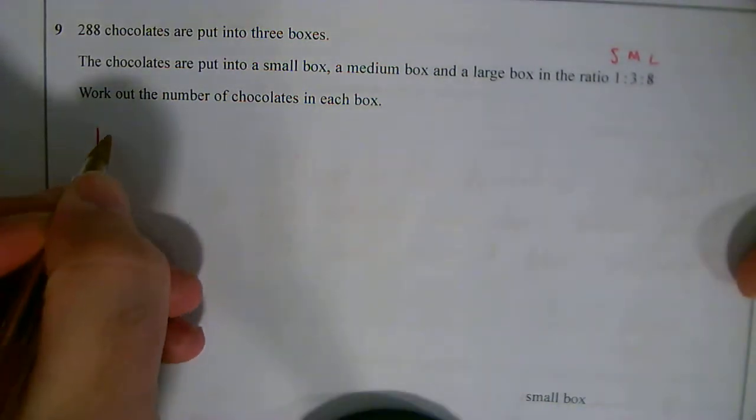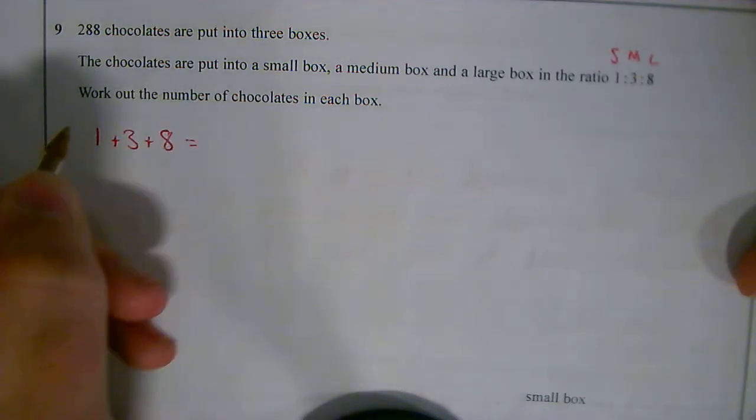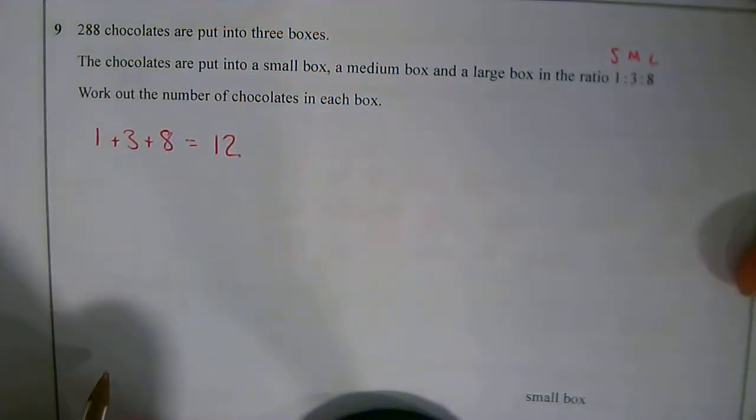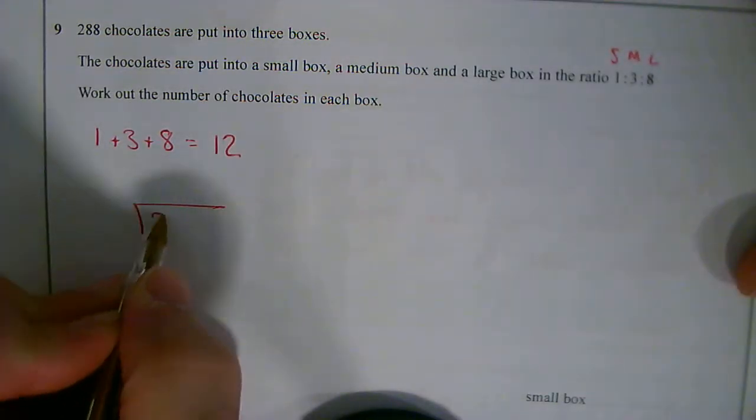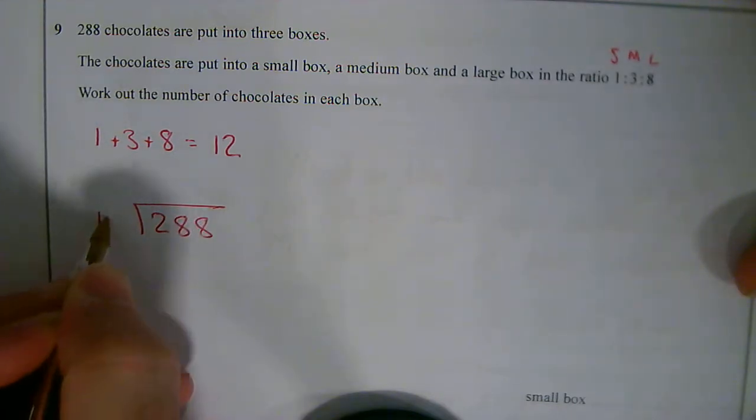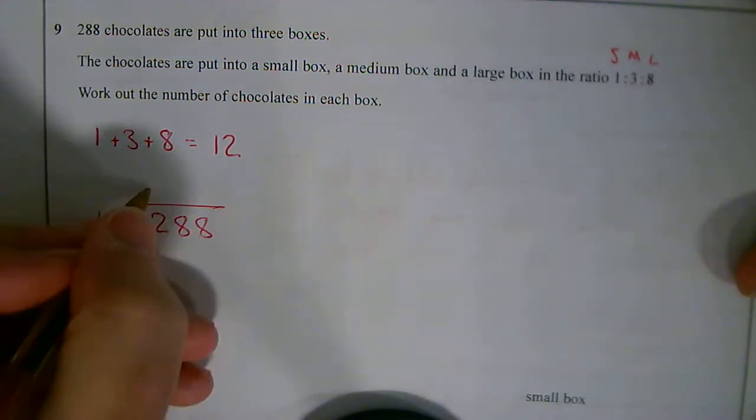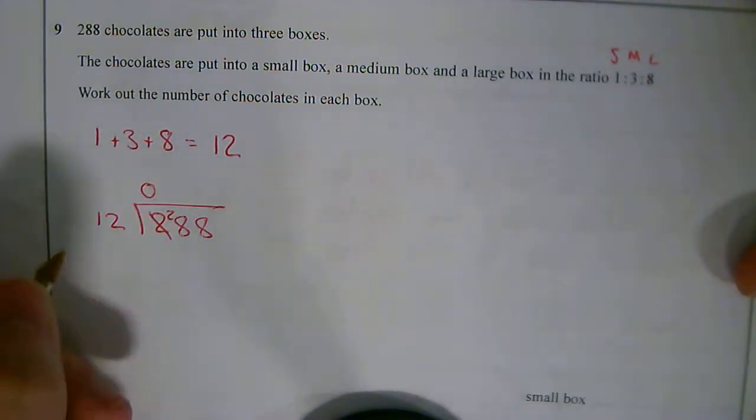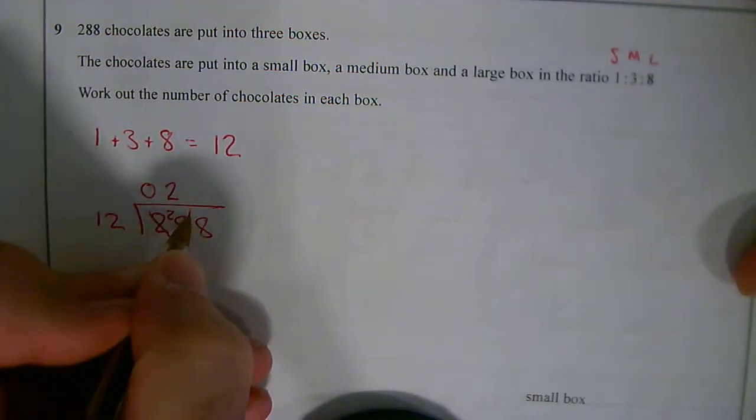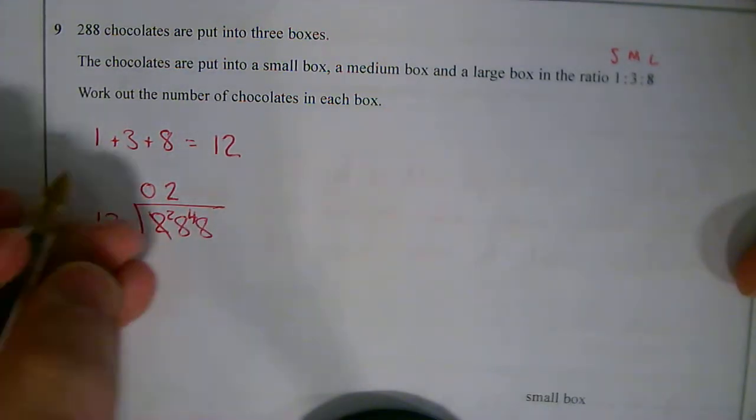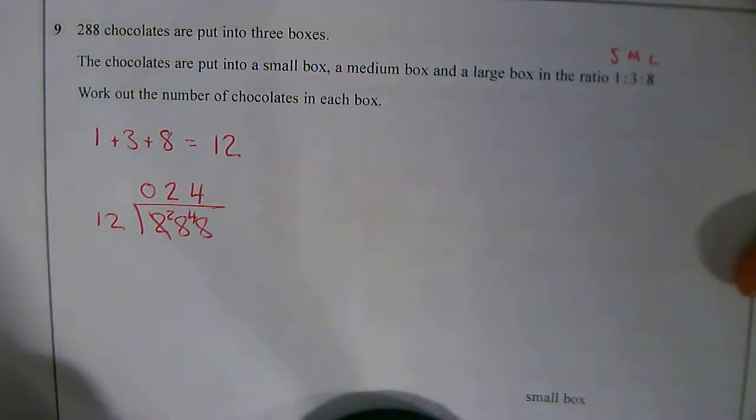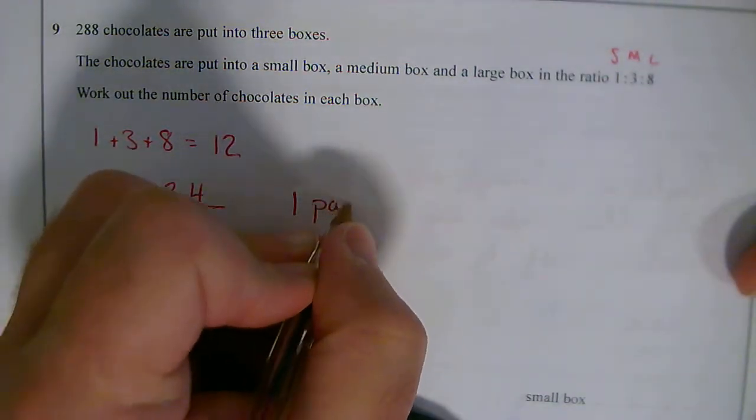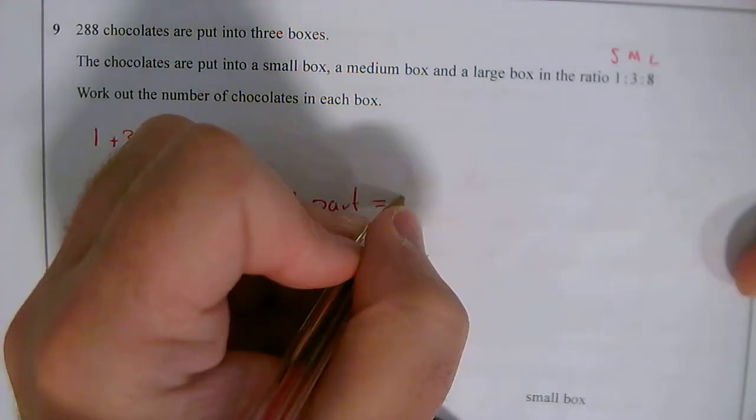So the first thing I do is I add the ratio, which is 12. I then do 288 divided by 12. 12 into 2 I can't do. 12 into 28 goes twice, 4 left over. 12 into 48 is 4. So 1 part equals 24.